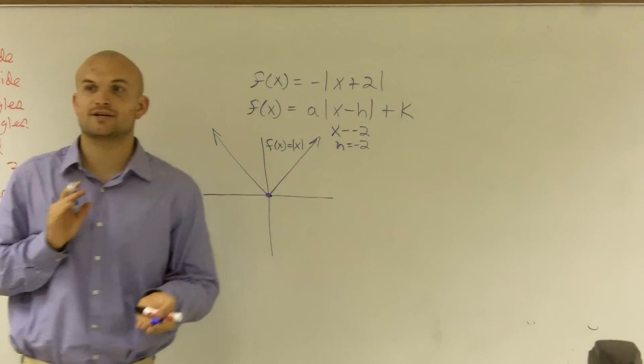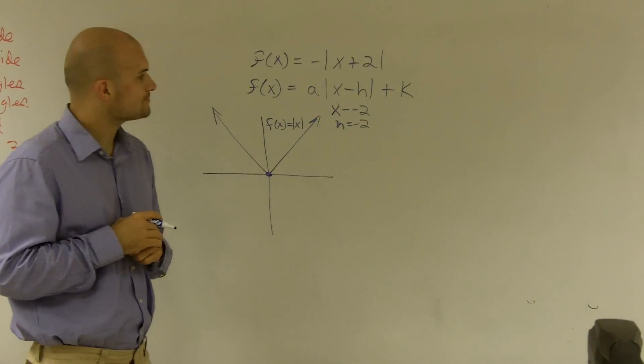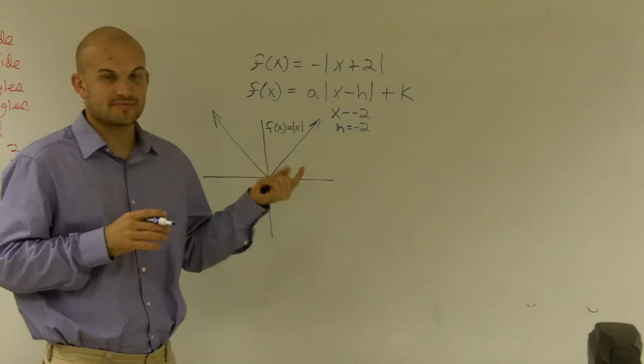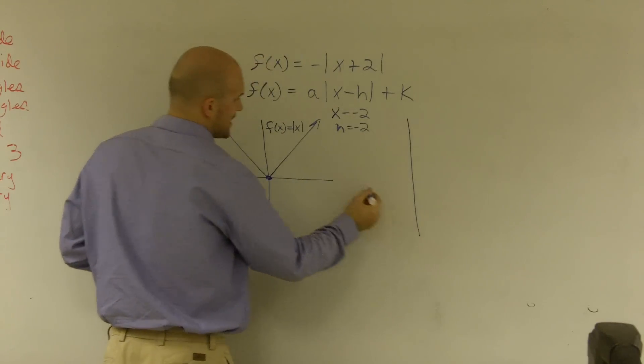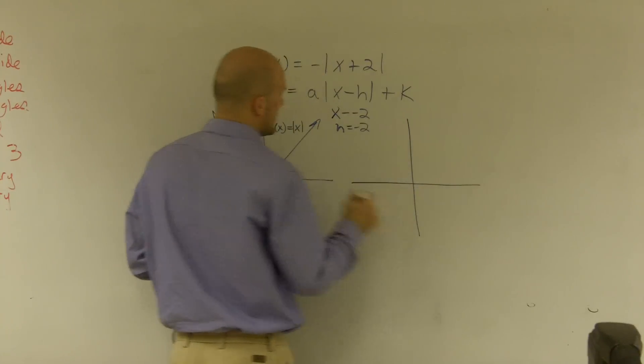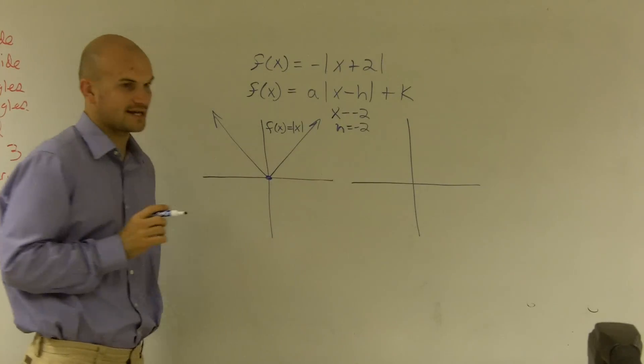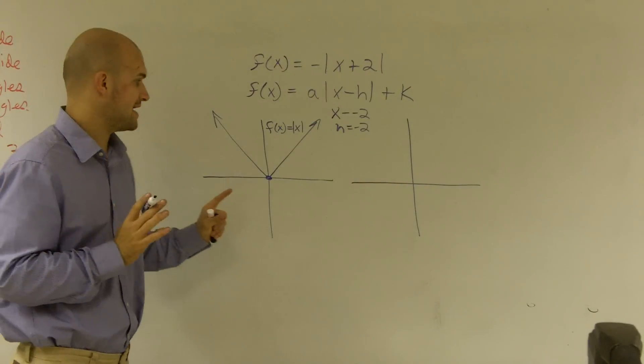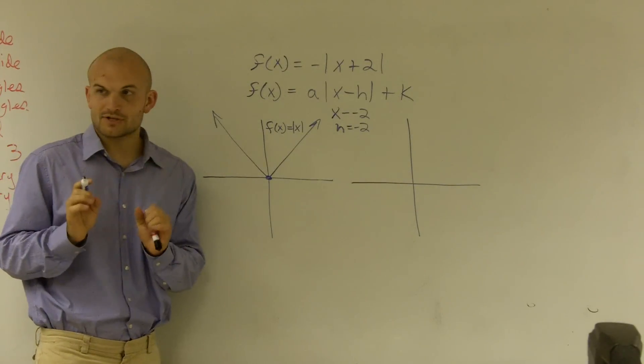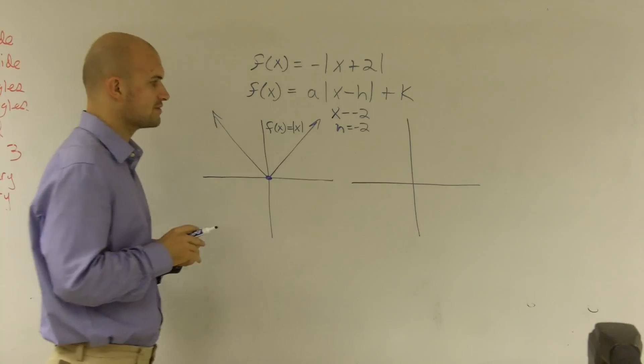And your 'k' is going to tell you to shift up or shift down. If it's positive, you're shifting up. So if I look at this problem, I have an absolute value function. What I'm going to do is use my transformations to move my vertex. That's going to give me where my new vertex is at and what the end behavior is. Then I'm going to pick two points and go back to a table method to finish the rest of the graph.